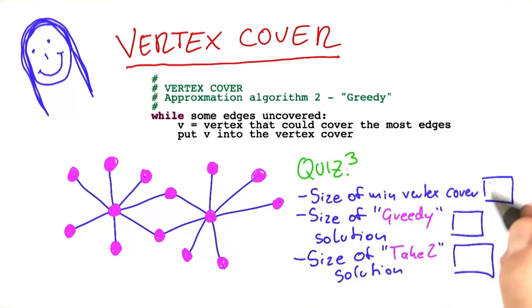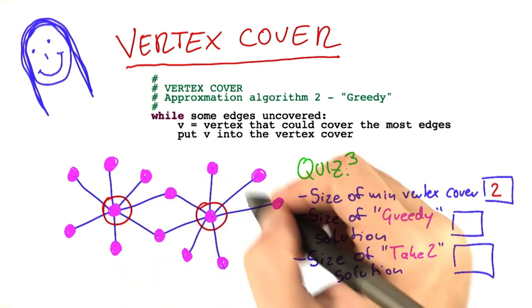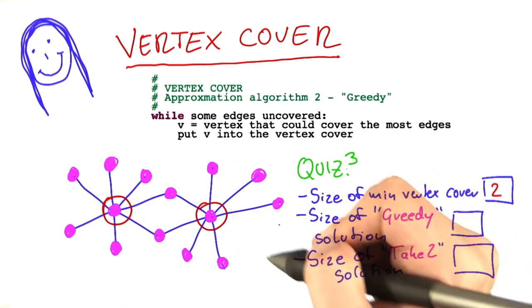So the first one is easy to see. The size of a minimum vertex cover is 2, because you can just take this one here and this one here, and all edges are covered. Of course, I constructed it that way.